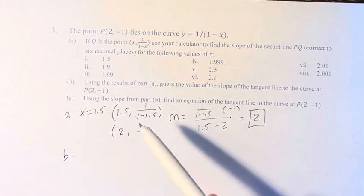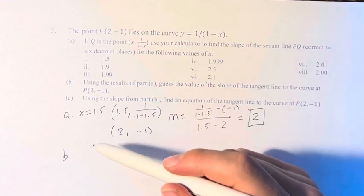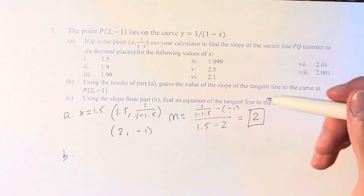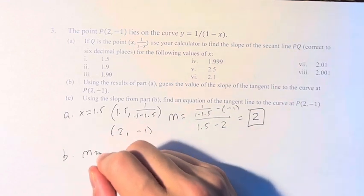And as we saw, as we're getting closer and closer to this point, the secant line approaches a slope of 1. That is going to be our guess that the slope of this tangent line is 1.